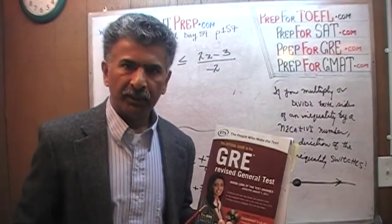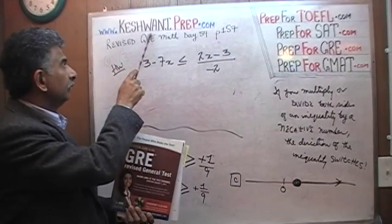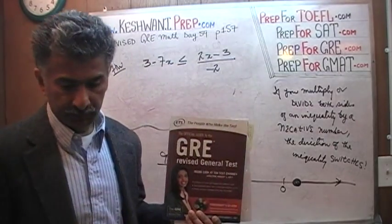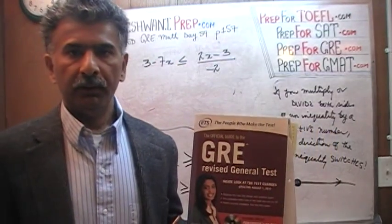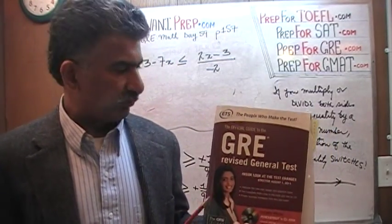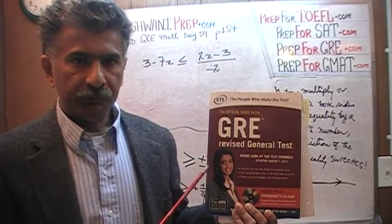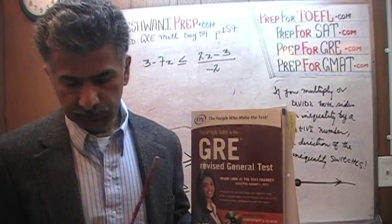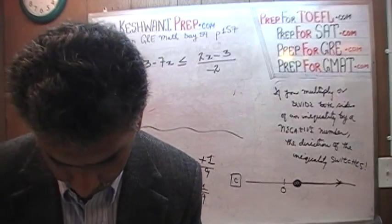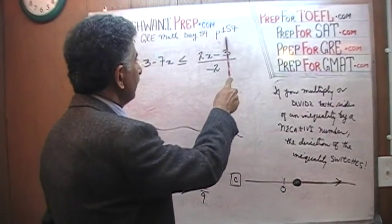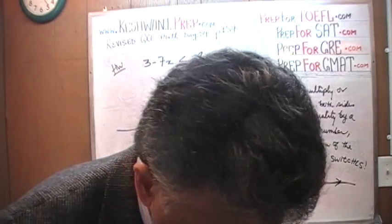Hello, my name is Keshwani — K-E-S-H-W-A-N-I. We are here because we want to prepare for the math portion of the GRE. We have been solving math problems out of this book, The Official Guide to the GRE Revised General Test. If you do not own this book already, purchase one immediately. The problem we are about to solve is on page 157, and today is our lesson number 60.